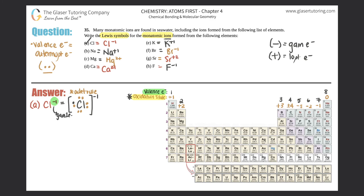Moving on, we have B — sodium, which was Na plus one. Sodium is in group one; it had one valence electron. But now it has a plus one charge, which means that it lost one electron. So I have to erase that one. There are no valence electrons that sodium has anymore when it becomes an ion. So I just bracket it and put the charge in the upper right-hand corner, and B is done.